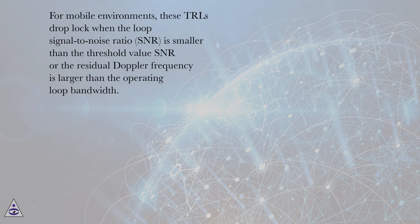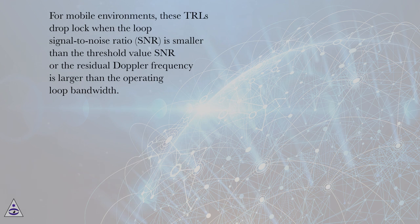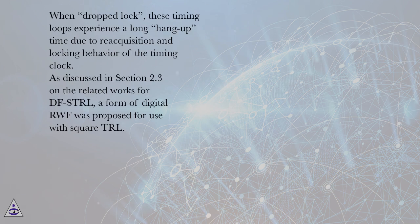For mobile environments, these TRLs drop lock when the loop signal-to-noise ratio (SNR) is smaller than the threshold value SNR, or the residual Doppler frequency is larger than the operating loop bandwidth. When dropped lock, these timing loops experience a long hang-up time due to reacquisition and locking behavior of the timing clock.